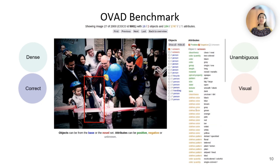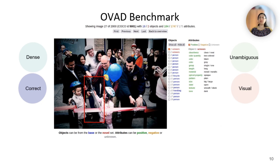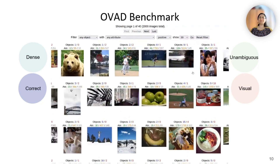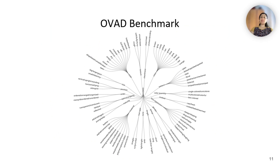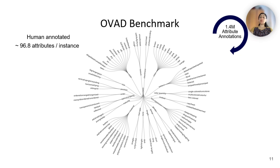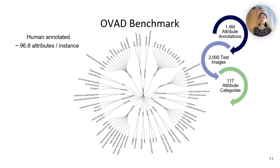We manually excluded infeasible object-attribute combinations during annotation to prevent incorrect-type errors. The benchmark undergoes different stages of rigorous quality testing to ensure annotation consistency. The OVAD evaluation dataset is fully annotated by humans. It contains an average of 96 attribute annotations per object, making it the most densely annotated object-level attribute dataset. The dataset consists of 1.4 million attribute annotations across 2,000 test images, considering 117 attribute categories organized in a hierarchy of 19 attribute types, covering 180 object categories.